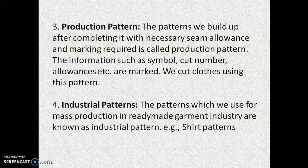Next is production pattern. The pattern we build up after completing it with necessary seam allowances and markings required is called the production pattern. Information such as symbols, cut number, and allowances are marked on it. We cut cloth using this pattern. Production pattern, as the name indicates, jis se final production hona hai — that is the production pattern. All the markings are there: seam allowances, style lines, cut number, grain mark, and other allowances are mentioned on the production pattern, which is used for the production and cutting of the garment.